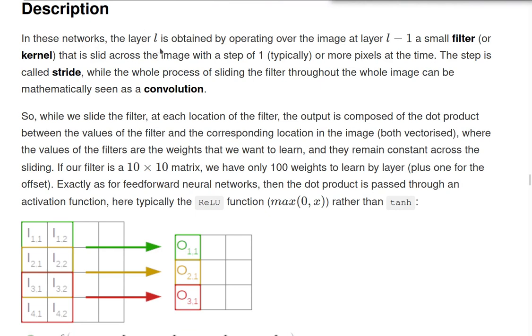So how do convolutional networks work more precisely? The convolutional layer L is obtained operating again over the previous layer, that in this case is an image - it can be something else, but let's consider it must be a matrix. Let's consider it to be an image to simplify. So it works with a small filter that slides across the image with some step. Here in this figure, we have a step of one. So first here, then here, then here, but it could be a step of two. So it could be this one and then the red directly, bypassing the yellow one. So this step is called stride, and the process of sliding the filter is mathematically a convolution.